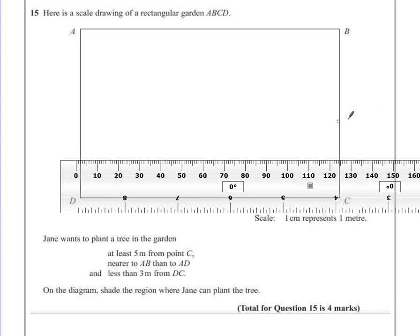To do that we're going to use a compass. So if we measure the radius of our circle to be 5cm, anywhere along the radius of the circle will be 5m away.